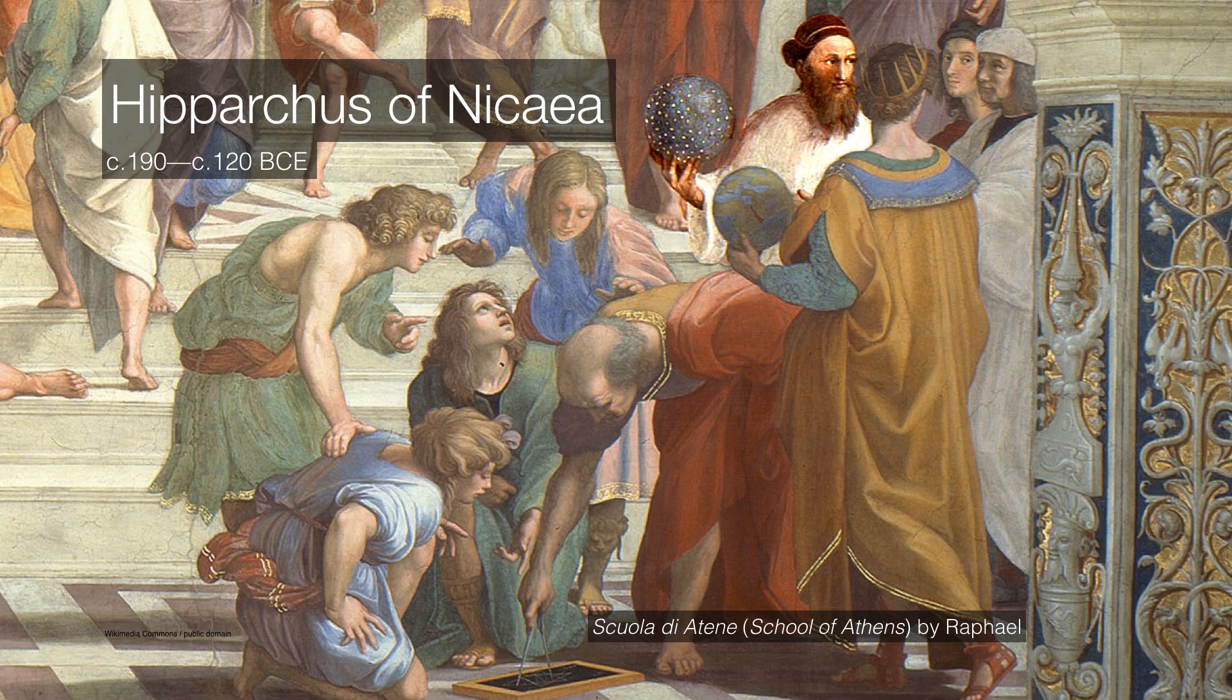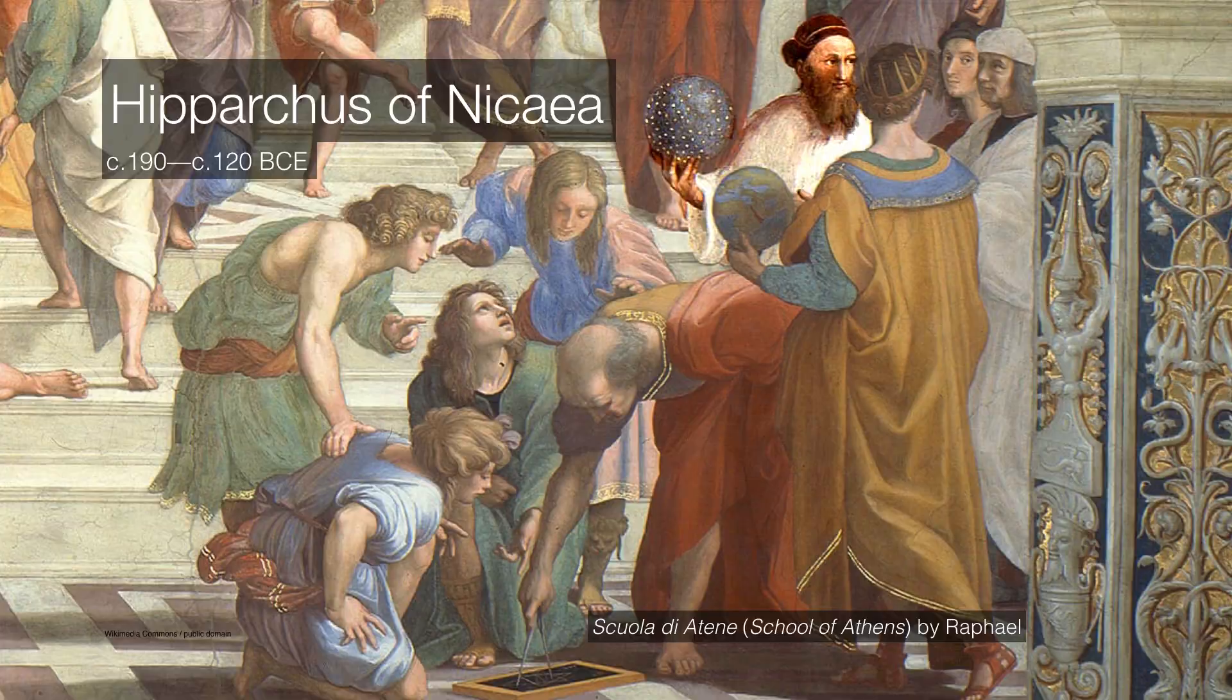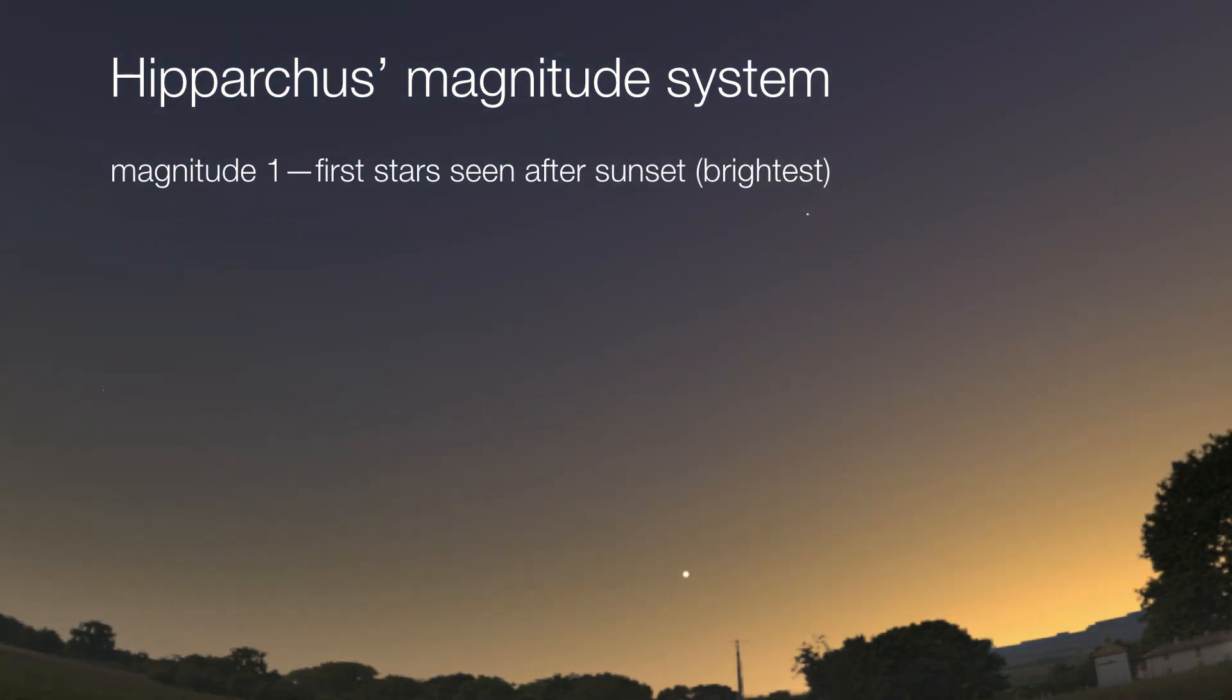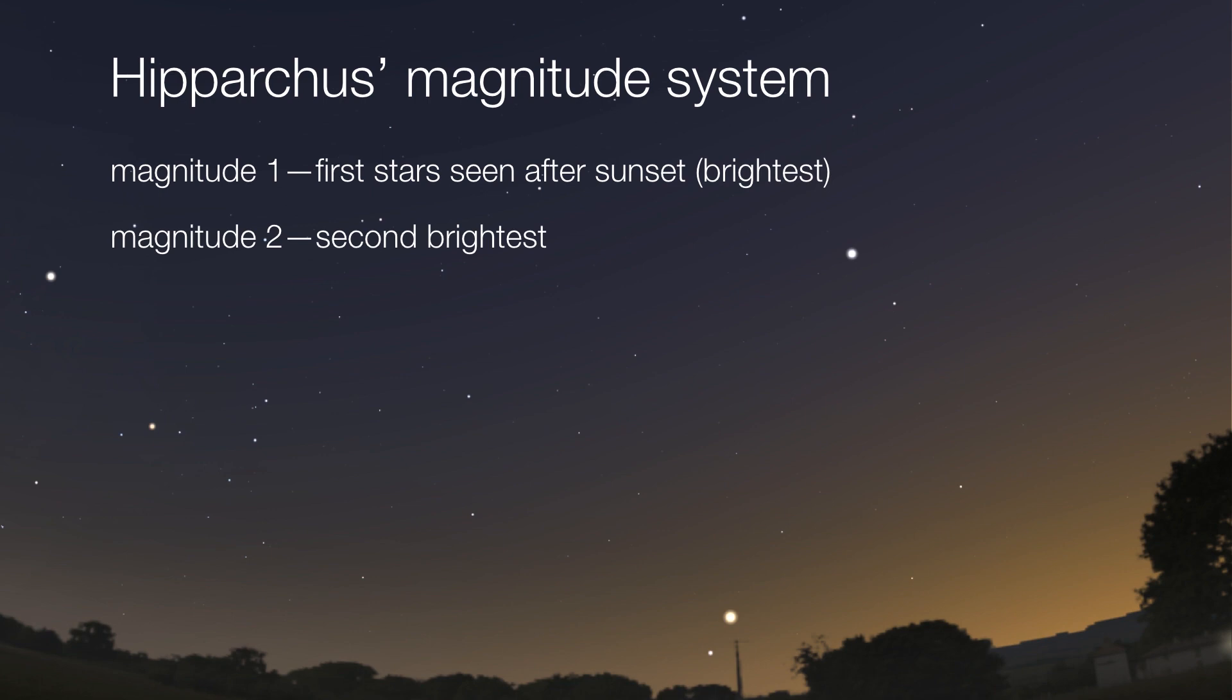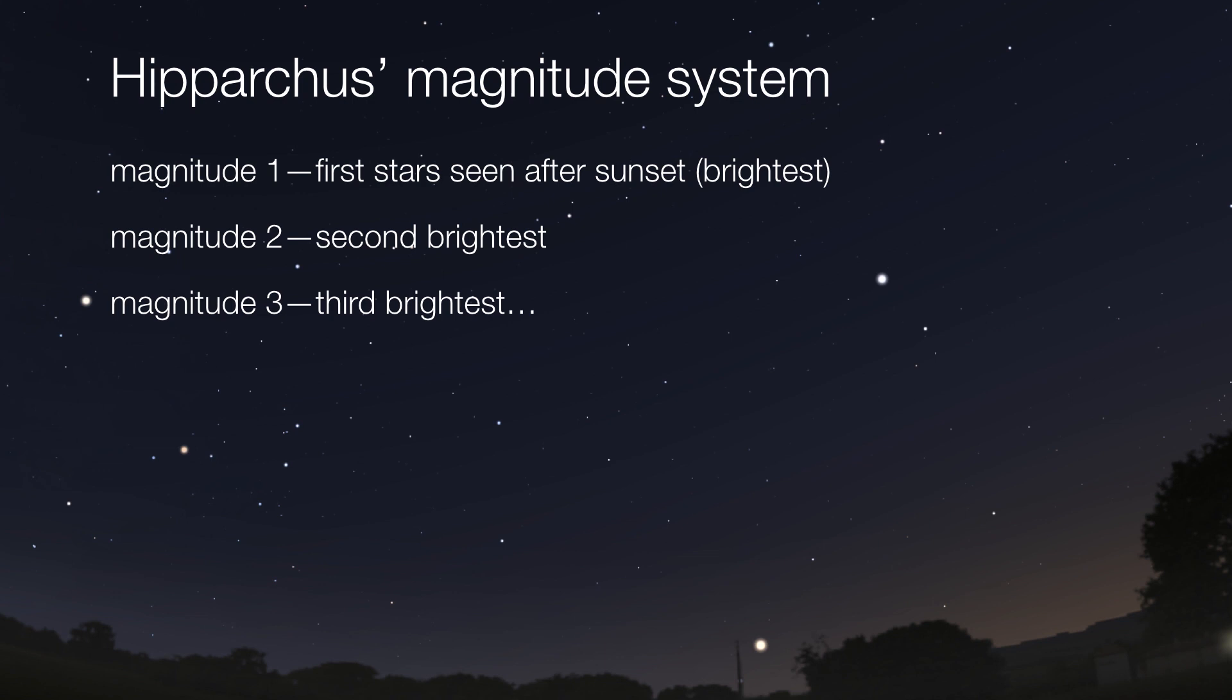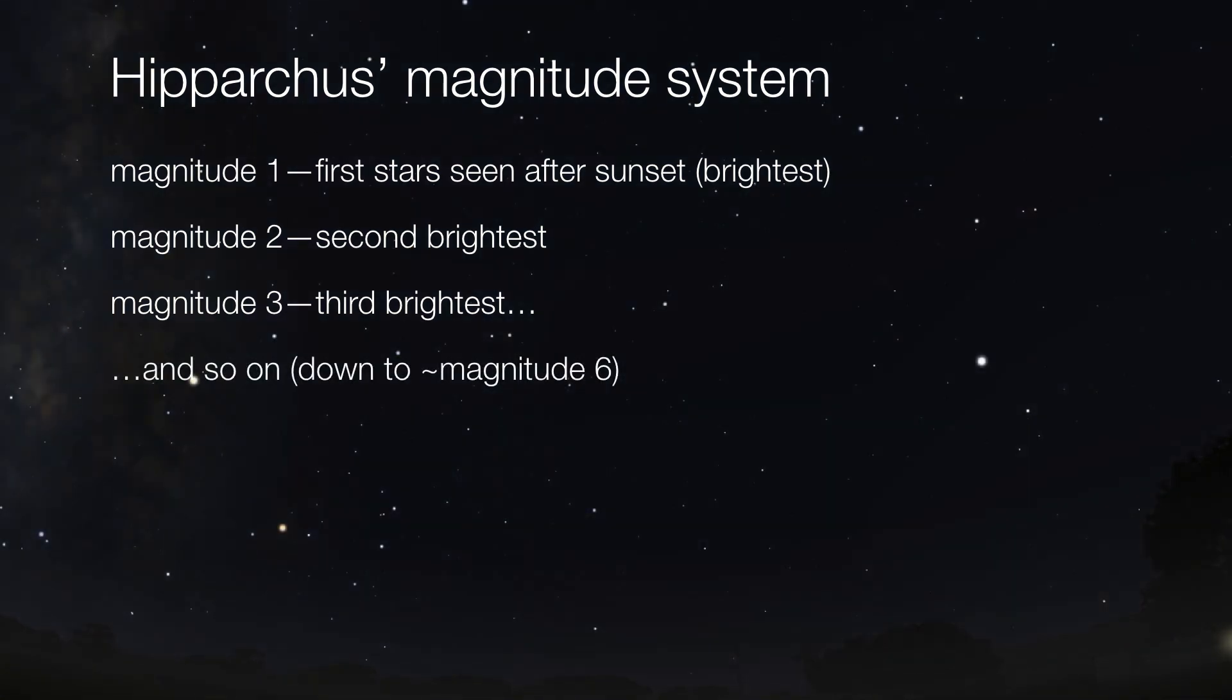The first astronomer to characterize the brightness of stars was Hipparchus of Nicaea. And what he did was define a magnitude system based upon the brightness of stars as he perceived them. He would watch the sky as the sun was setting, and the first stars that would come out, he assigned them as magnitude one, followed by the second stars that he would notice would be magnitude two, and three for the third brightest stars, four, and all the way down until magnitude six, where magnitude six are the faintest stars that the human eye can detect.